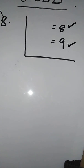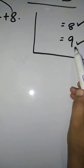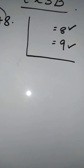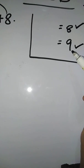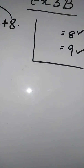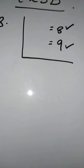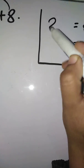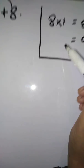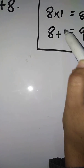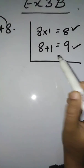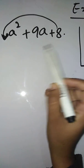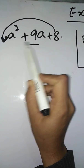For example, 2 × 4 = 8, but 2 + 4 = 6, not 9. Try 8 × 1 = 8, and 8 + 1 = 9. So the two factors are 8 and 1. Now write those two factors in place of the middle term.